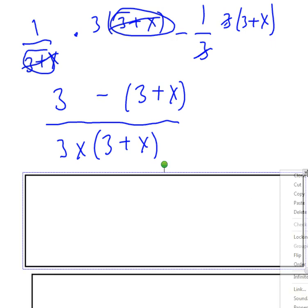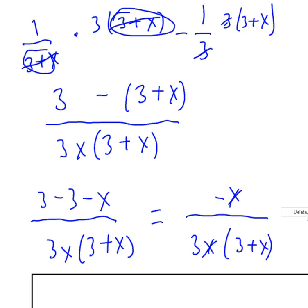Okay, so then what I'm going to do is I'm going to distribute the negative through. That gave me a negative three minus x. And then I combine like terms in the numerator. Notice I didn't touch the denominator at all.